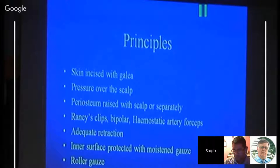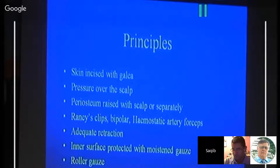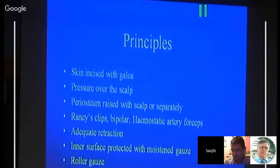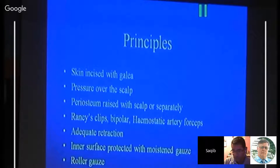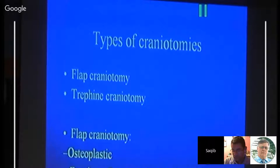When giving the incision, the skin is incised together with the galea. Apply pressure over the skin after incision for hemostasis. The pericranium can be raised with the scalp or separately. Raney clips can be applied for hemostasis; bipolar should be used with caution as excessive use hinders healing. Artery forceps can be applied. If you need to retract too much, always extend the incision rather than tearing the skin. The scalp surface should be protected with moist gauze, and roller gauze placed on the folded side of the flap to prevent artery kinking. Dissect the interfacial fat carefully around the temporal orbital region.